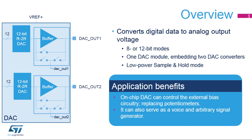The STM32G0 Digital to Analog Converter converts 8 or 12-bit digital data to an analog voltage. The DAC module has two converters that can work synchronously or asynchronously. A low power sample and hold mode is also integrated. The DAC can interface with external potentiometers or bias circuitry, and it can also create voice and arbitrary signals.